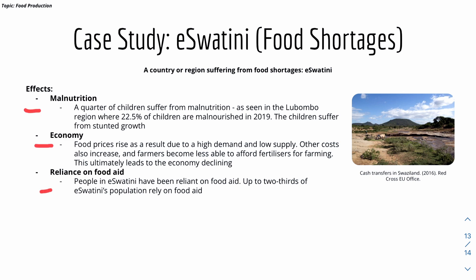Effects of food shortages on the population include malnutrition — a quarter of children suffer from it, with 22.5% malnourished in 2019. On the economy, food prices rise due to high demand and low supply. Other costs also increase, meaning farmers become less able to afford fertilizers, leading to economic decline — a cycle where rising costs lead to less food grown, lower supply, and even higher food prices. Up to two-thirds of East Eswatini's population rely on food aid.